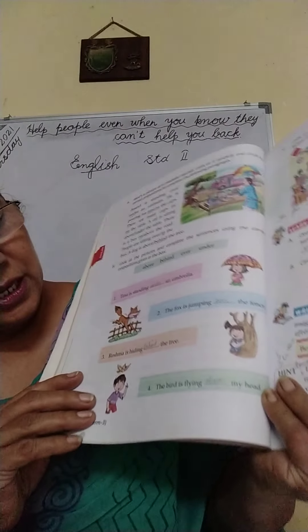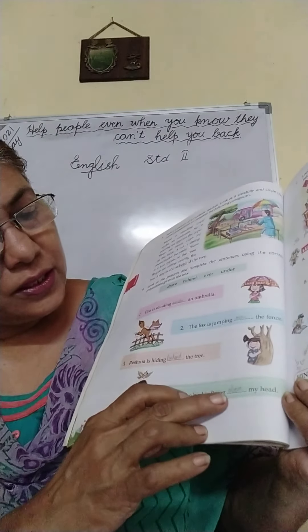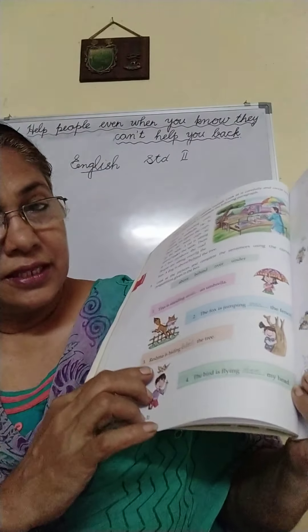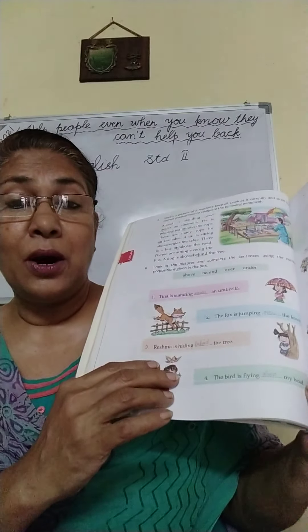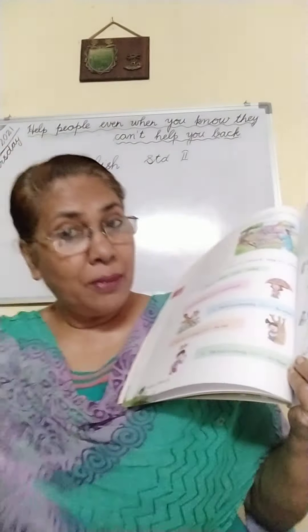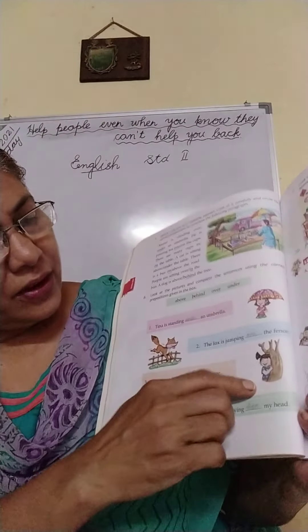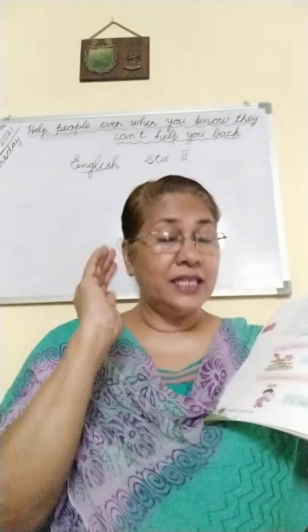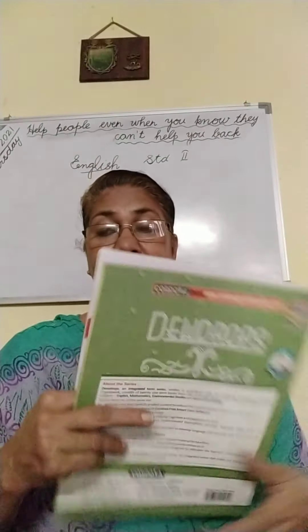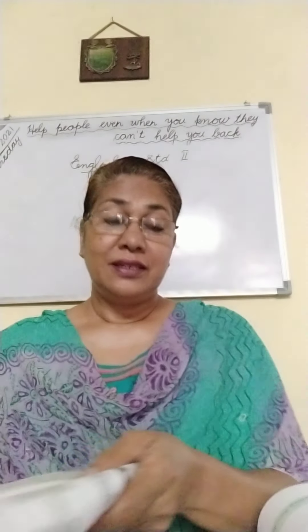In this exercise, prepositions are given. See — the bird is flying above the head. See the difference between above and over — all this you should know. The bird is flying above, just on top. Now what is the next one? Reshma is hiding — see where Reshma is hiding — behind, means at the back, at the back of the tree.